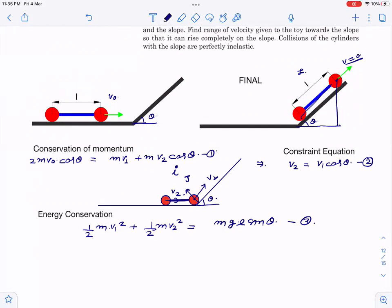For completion, we want to find v₀. We have v₁ and v₂ here, but v₂ is v₁ cos theta. First cancel m: v₁ squared plus v₂ squared equals v₁ squared plus v₁ squared cos squared theta equals 2gl sin theta. So v₁ squared times one plus cos squared theta equals 2gl sin theta. Now substitute v₁ from the previous equation.